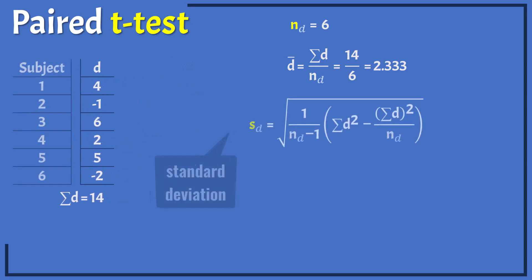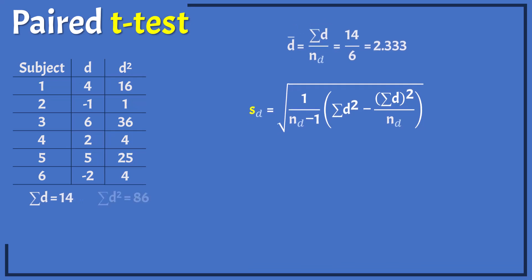Next, we can calculate the standard deviation using this formula. We need the sum of squares of the differences which adds up to 86.